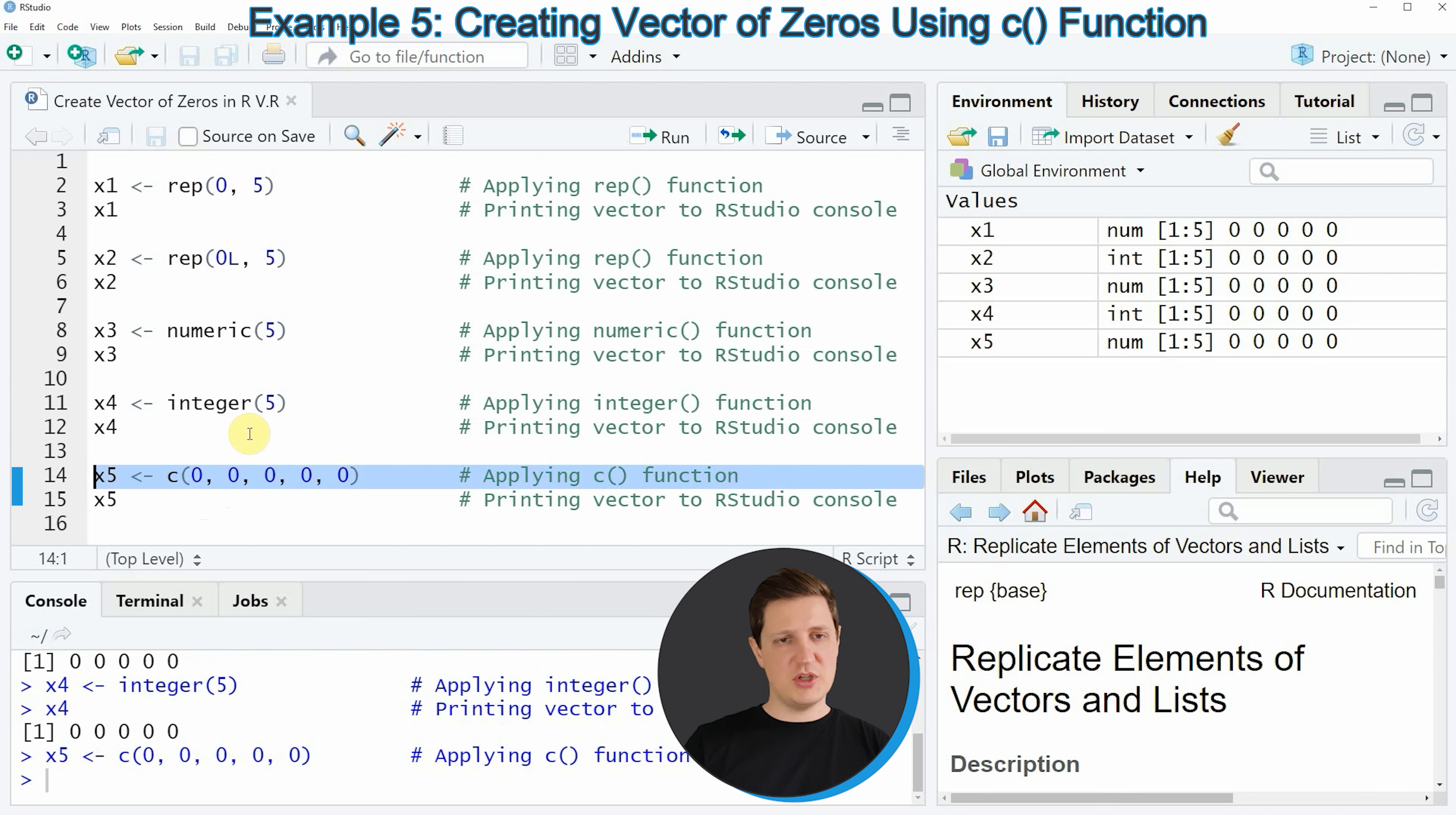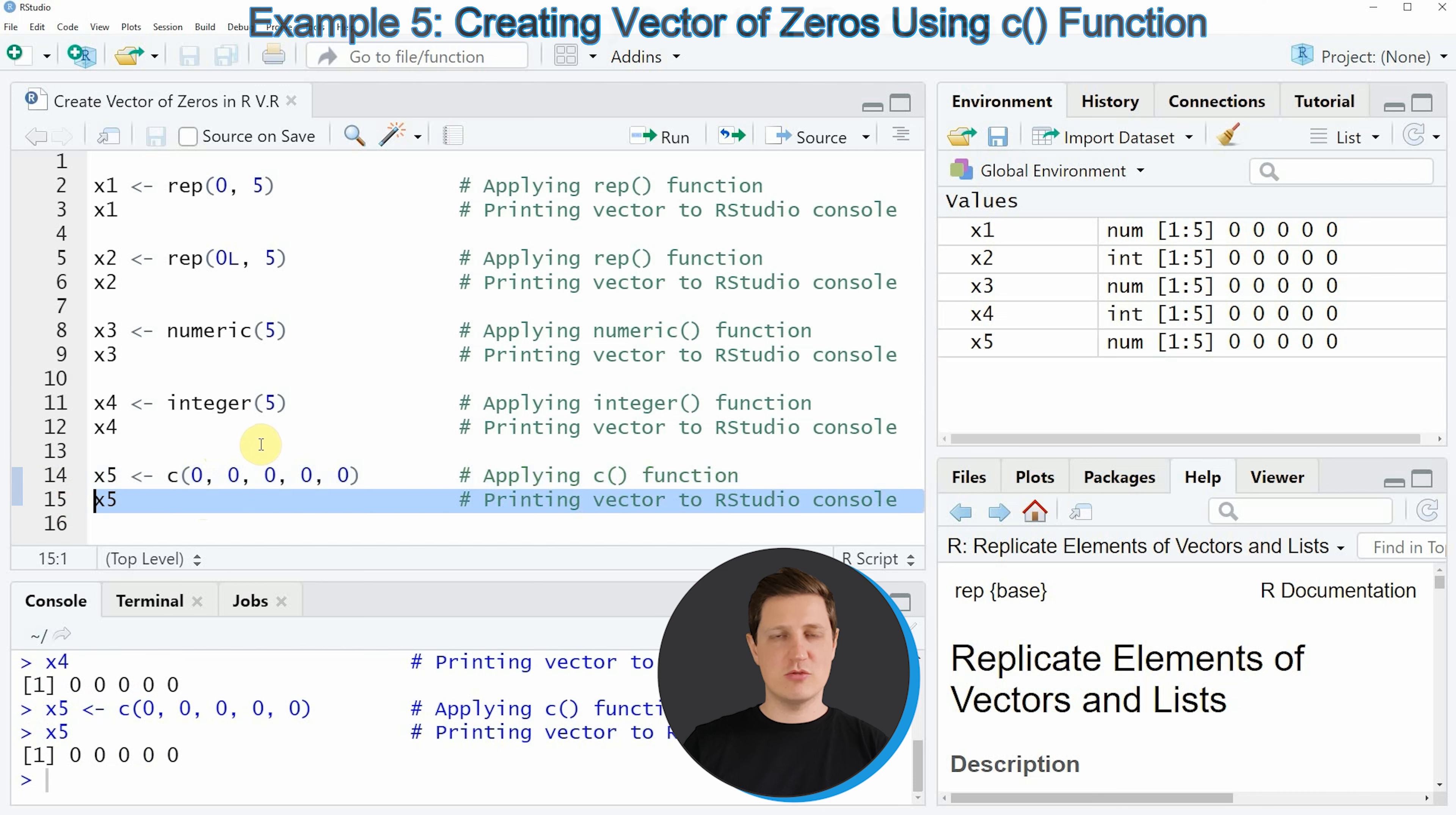If you run line 14 of the code another vector object is created consisting of five zeros.